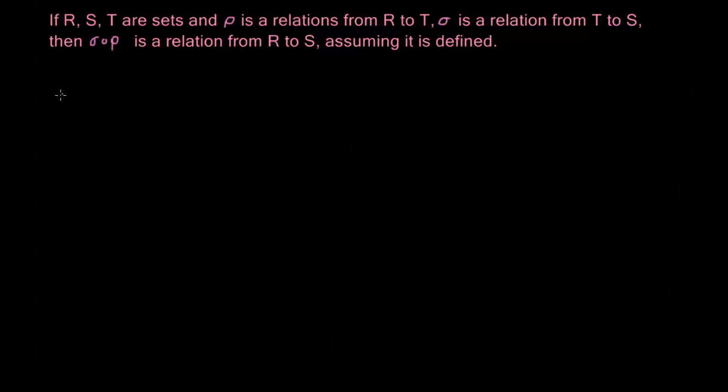So we say that if R, S, and T are sets and ρ is a relation from R to T, and σ is a relation from T to S, then σ composed with ρ is a relation from R to S, assuming it is defined.